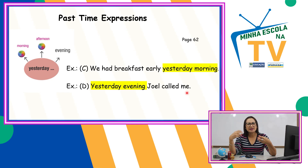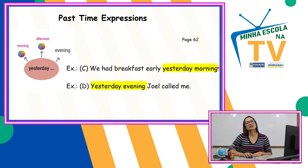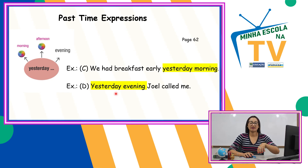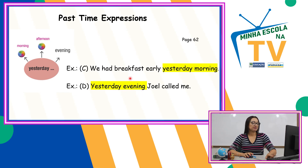Algumas sentenças: 'We had breakfast early yesterday morning' — nós tomamos café cedo ontem de manhã. O 'yesterday morning' pode aparecer no final de uma sentença, como no começo — não existe uma regra fechada para isso. 'Yesterday evening, John called me' — ontem à noite, John me ligou. Aqui está no início; 'I had breakfast yesterday morning' está no final. Dá tudo certo.